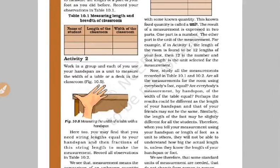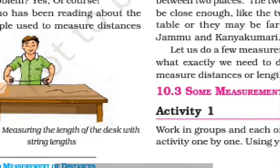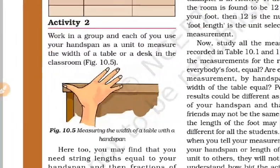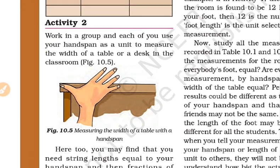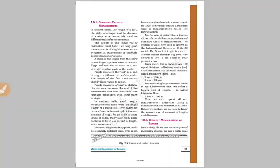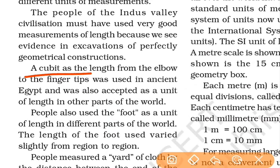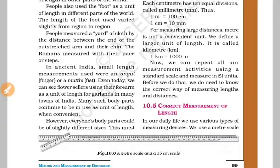When we use strings to measure, we can measure curved or irregular lengths. For example, the length from the elbow to the fingertips was used as a unit. You can use the same finger as a unit of measurement. These are body-based ancient measurement methods.